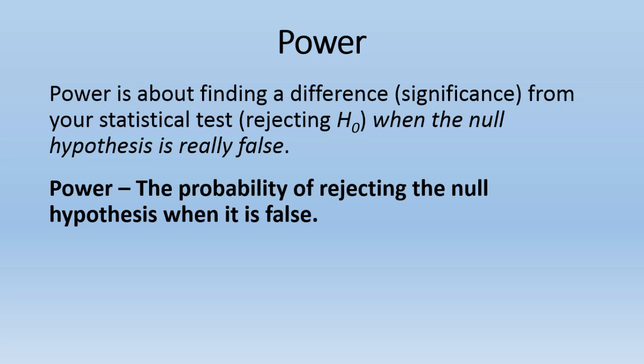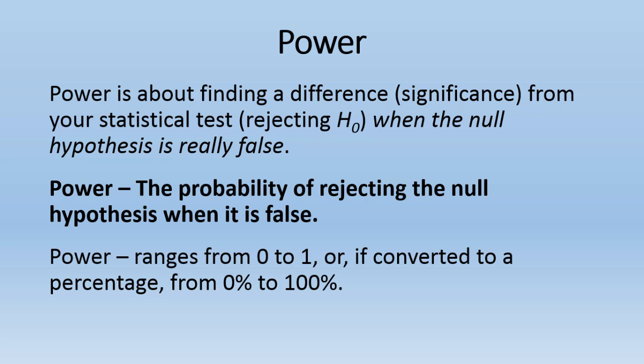Power is defined as the probability of rejecting the null hypothesis when it is false. Power ranges from 0 to 1, or if converted to a percentage, from 0% to 100%. For example, I could say I have a power of 0.5, or I could say my power is 50%.